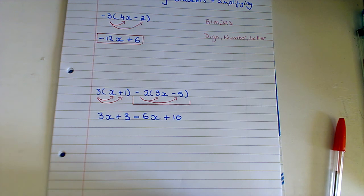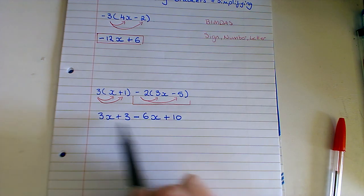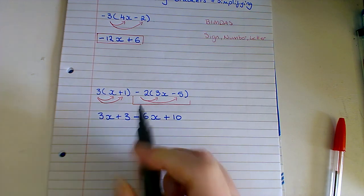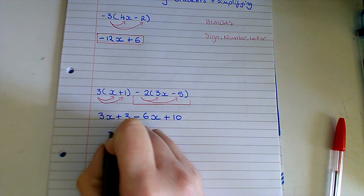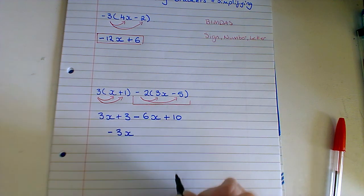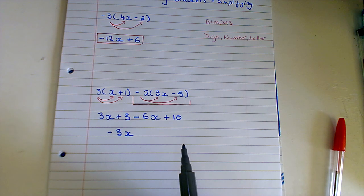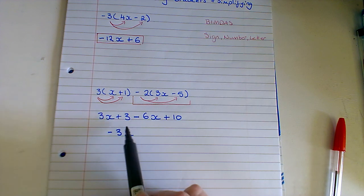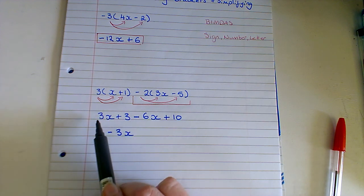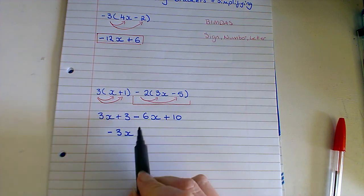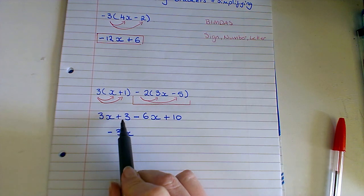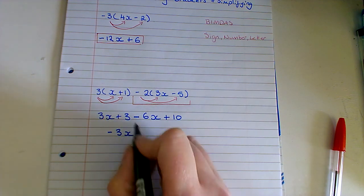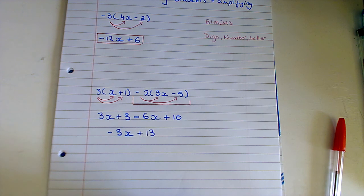And this is where the simplifying comes into it. Because I have to acknowledge here well I have a 3x and a minus 6x. So I can add the two of them and I get minus 3x. So the difference being and if you're wondering why isn't she changing the signs here, because up here I'm multiplying, so I'm following the multiplication rules. But down here I'm adding. So I have a positive 3 take away 6 gives me a negative 3. And then I have 3 plus 10 which is 13.